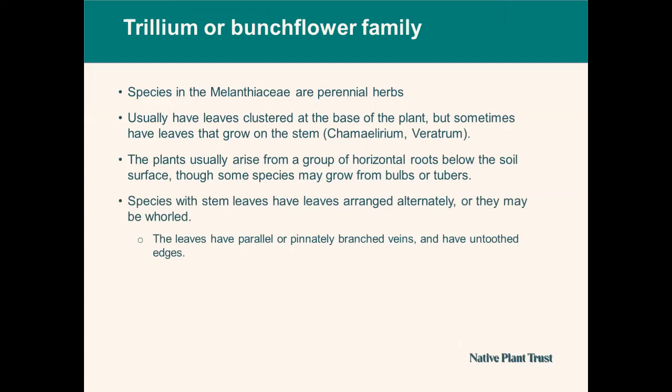A few notes about this family. The species in the Melanthaceae are perennial herbs. Usually they have leaves clustered at the base of the plant, though sometimes they have leaves that grow on the stem, such as in Chamaelirium or Veratrum. The plants usually arise from a group of horizontal roots below the soil surface, though some species may grow from bulbs or tubers. Species with stem leaves have leaves arranged alternately or they may be whorled, with parallel or pinnately branched veins and untoothed edges.